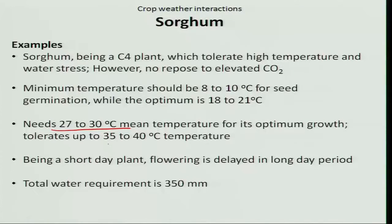The next stage is Stage 2, consisting of panicle initiation, emergence of a flag leaf, and boot stage. During this stage, water requirement is the most critical factor; otherwise it will affect the potential grain number per plant. Stage 3 consists of 50 percent flowering, soft dough stage, hard dough stage, as well as physiological maturity, starting with flowering, pollination, fertilization, and maturation of the grains.